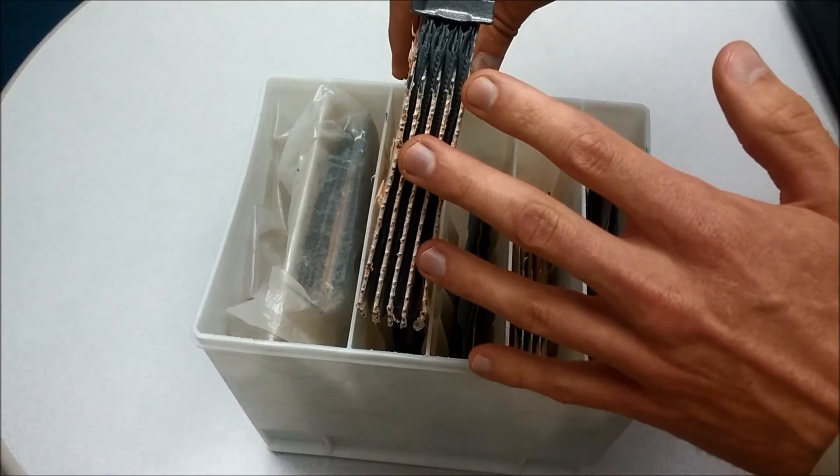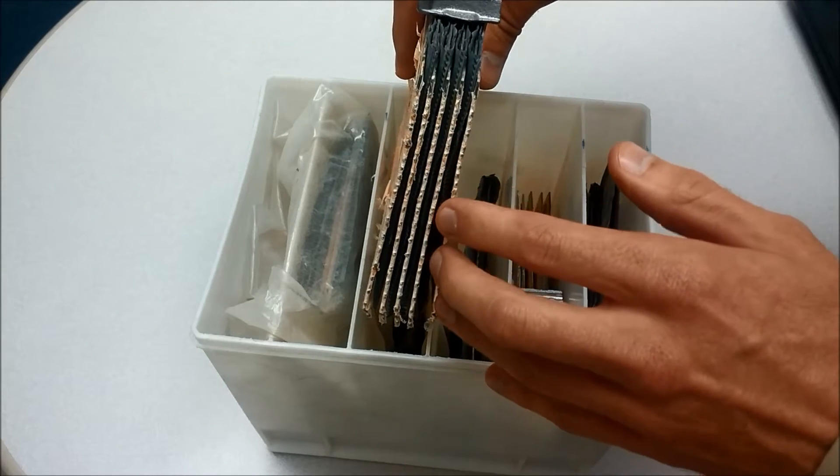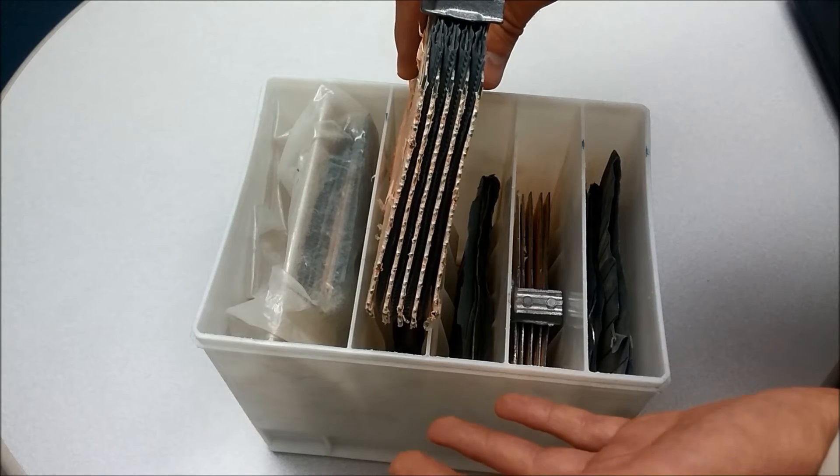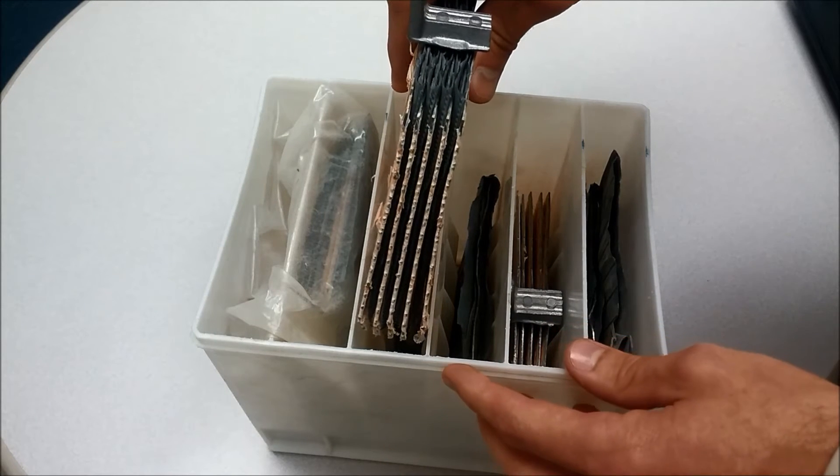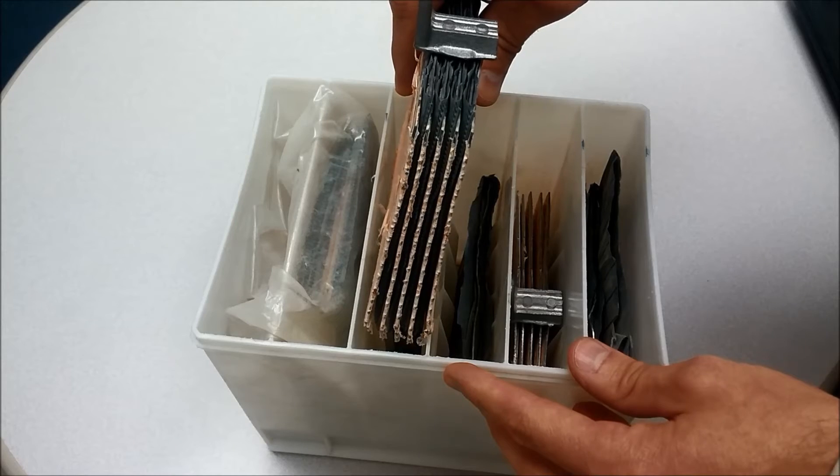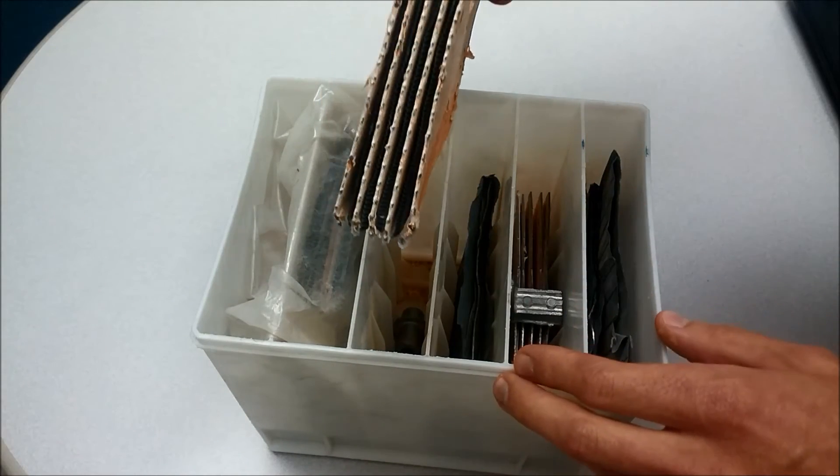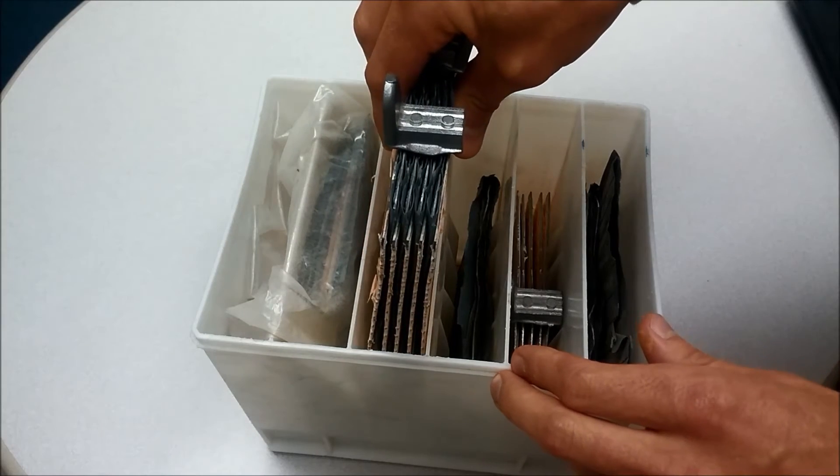Eventually, both of the positive and negative plates become lead sulfate. The plates are the same. They're now similar metals. And what was the acid or electrolyte is now water. The sulfur has left it, and so all that's left in there is H2O. That's a discharged battery.